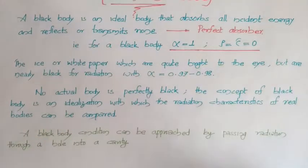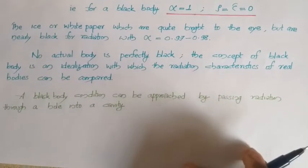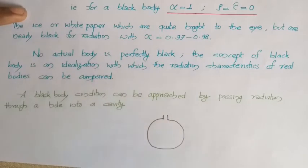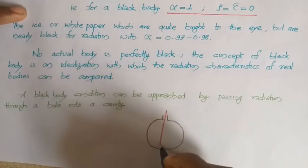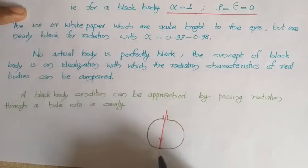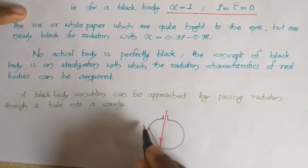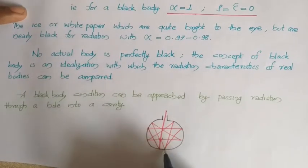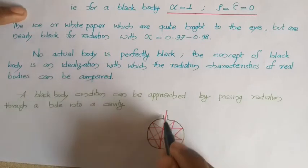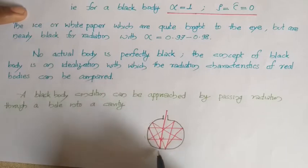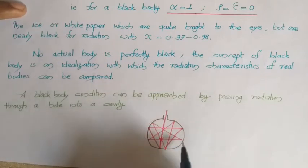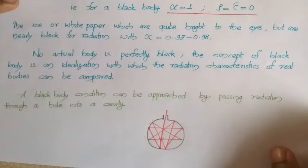A black body condition can be approached by passing radiation through a hole into a cavity. When radiation is incident on the surface it gets reflected, and upon each reflection the cavity absorbs some energy while the remainder continues to reflect. There will be multiple incidents of this radiation happening, and finally after repeated reflections the entire energy is absorbed along the walls of the cavity — complete absorption occurs. So radiation passing through a hole into a cavity can be idealized as a black body.